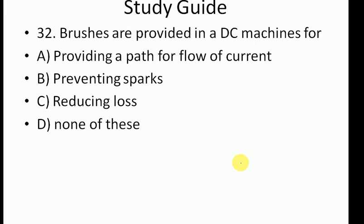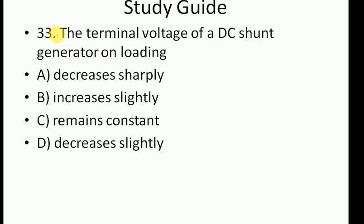Next, Question 32: Brushes are provided in a DC machine for what purpose? Option B is the correct answer - providing a path for flow of current. Although brushes also help prevent sparking and reduce losses, that is a secondary purpose, not the primary one.